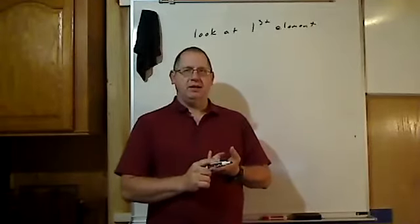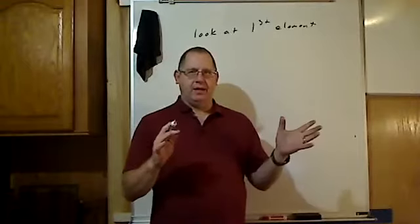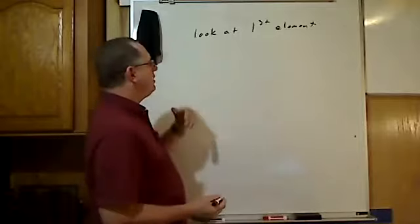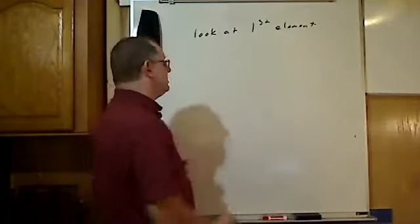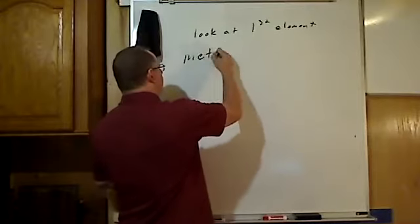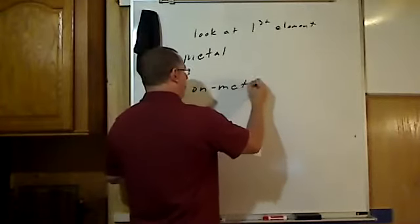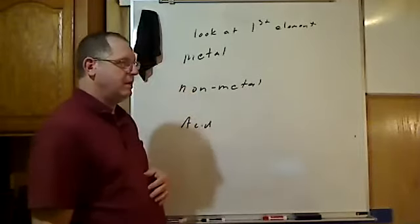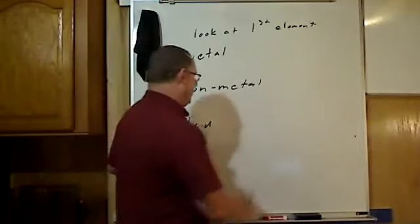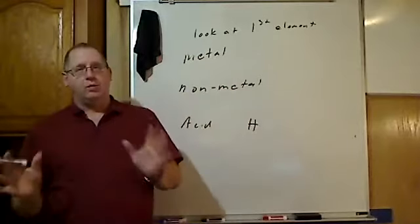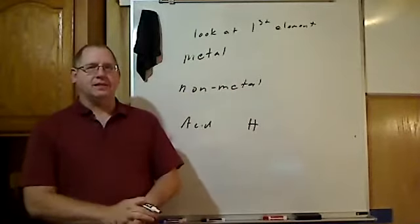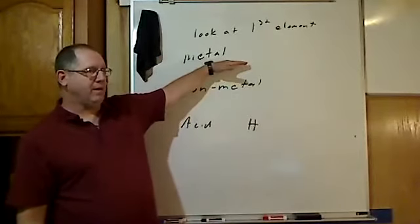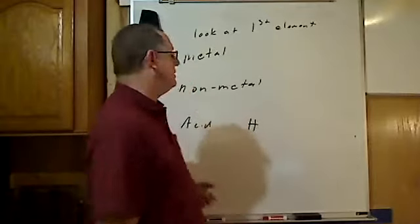If we look at the first element, we have three choices: it's either going to be a metal, a nonmetal, or an acid. We will tell if it's an acid because the first element is going to be H. If it starts with a metal, we're going to name it as a cation.